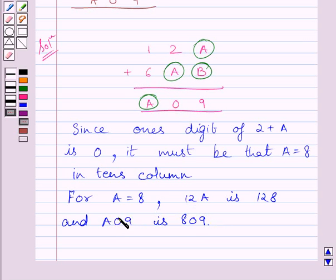We know that A09 represents the sum of two numbers and 12A represents one of the number. If we subtract 128 from 809 we get the other number.